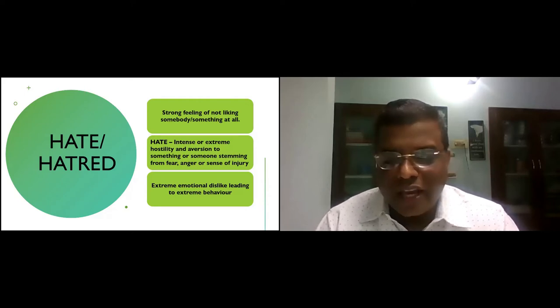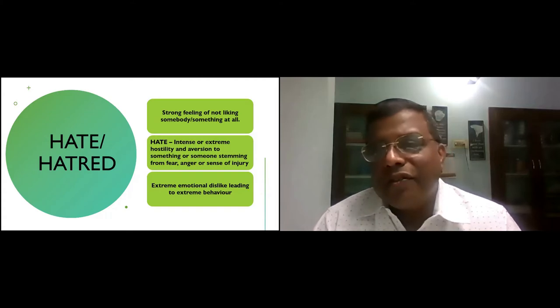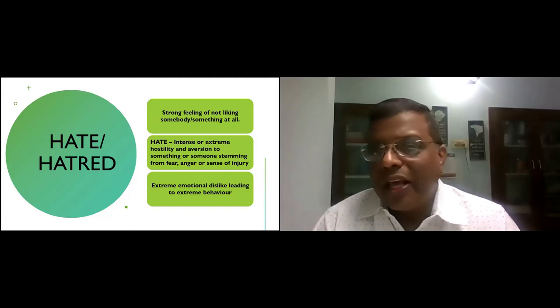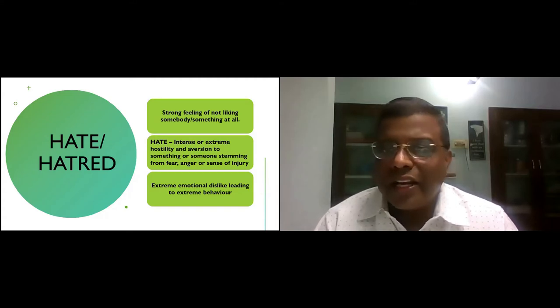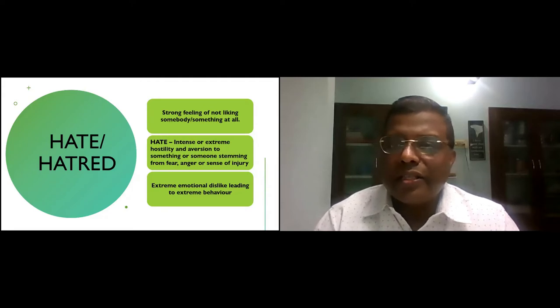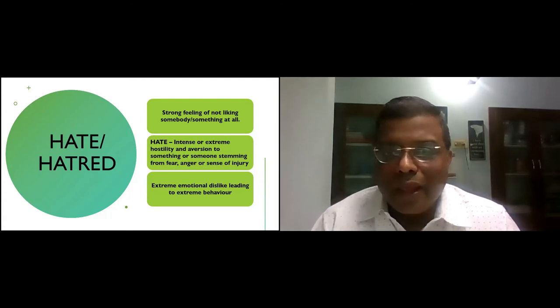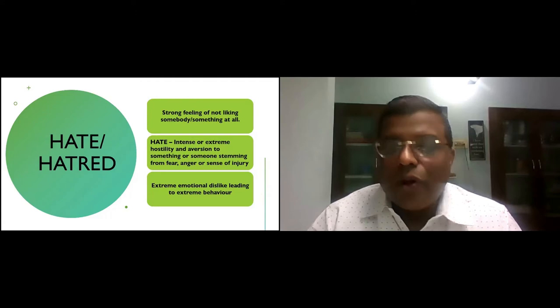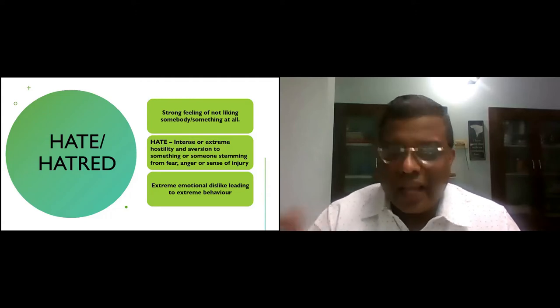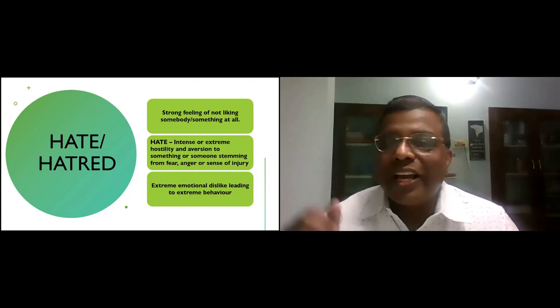The word hate comes from an old English word called hete, H-E-T-E. It's generally defined as an extreme hostility, an aversion of something or someone, usually out of fear, out of anger, or a sense of injury. Hate is a deep and emotional feeling of dislike. The objects of hate vary from person to person. Normally, what people hate, generally, a lot of people are scared to hate cockroaches, or hate mice, or hate lizards, or hate spiders.